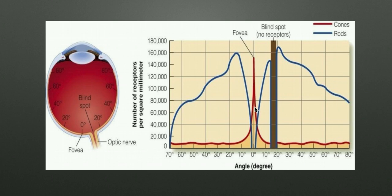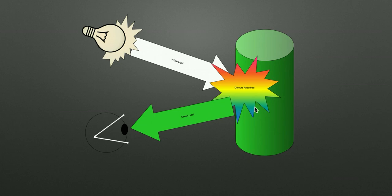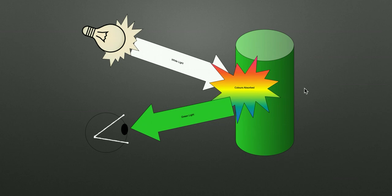The basic concept of how you perceive color: when you see an object as green, white light from the sun hits the object, and all colors of that white light are absorbed except green, which is reflected back into your eye. White light is composed of all the rainbow colors. So the cylinder looks green because it reflects green light and absorbs all other colors — that is how you perceive the beautiful world around you.